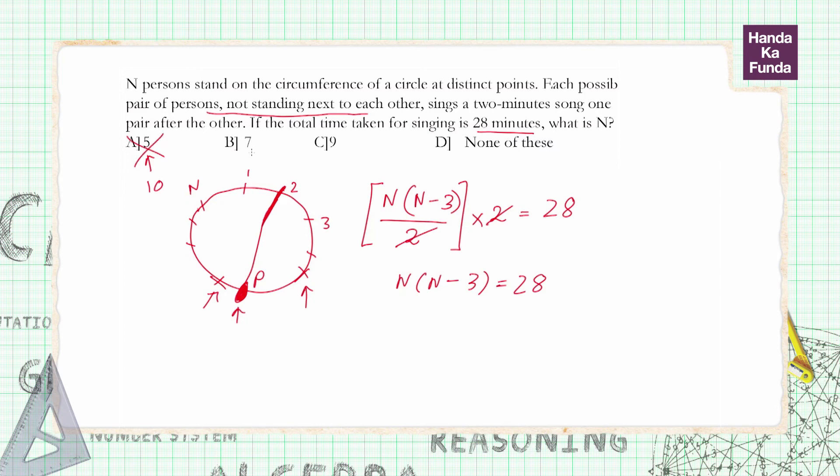7. 7 into 7 minus 3. 7 into 4 is 28. So option B quickly comes out as my answer because 7 into 4 is 28.